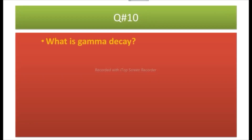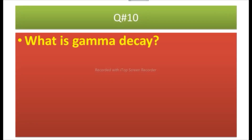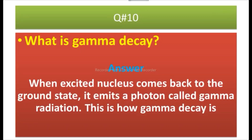Question number ten: What is gamma decay? Answer: When an excited nucleus comes back to the ground state, it emits a photon called gamma radiation. This is how gamma decay is carried out.